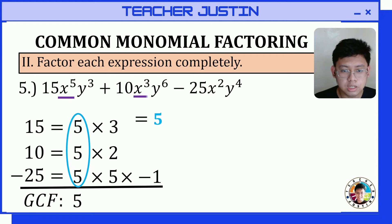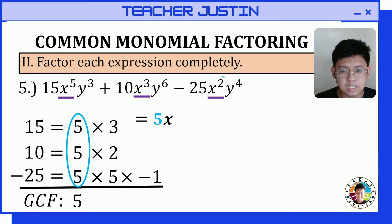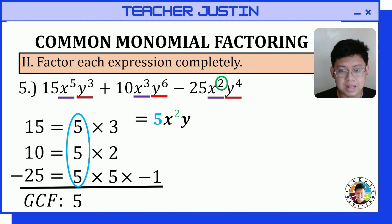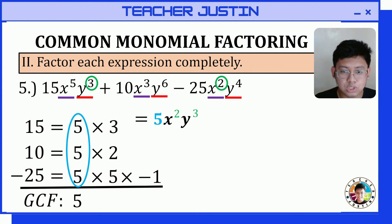Now let's focus on the variables. All terms contain x, so we copy x and use the smallest exponent, which is 2, giving us x squared. All terms also contain y, so we copy y with its smallest exponent, which is 3, giving us y raised to 3. Therefore, the greatest common factor of the polynomial is 5x squared y raised to 3.